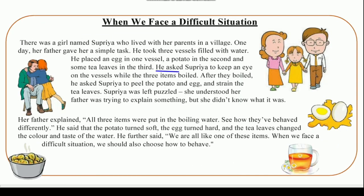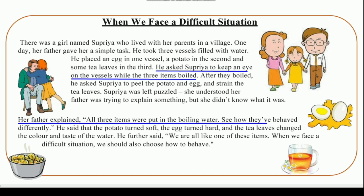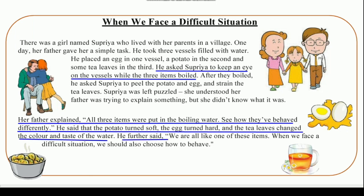He asked Supriya to keep an eye on the vessels while the three items boiled. Then her father explained: all three items were put in the boiling water — see how they have behaved differently. He said that the potato turned soft, the egg turned hard, and the tea leaves changed the color and taste of water. He further said, we are all like one of these items when we face a difficult situation, and we should choose how to behave. Write these sentences in your English copy.